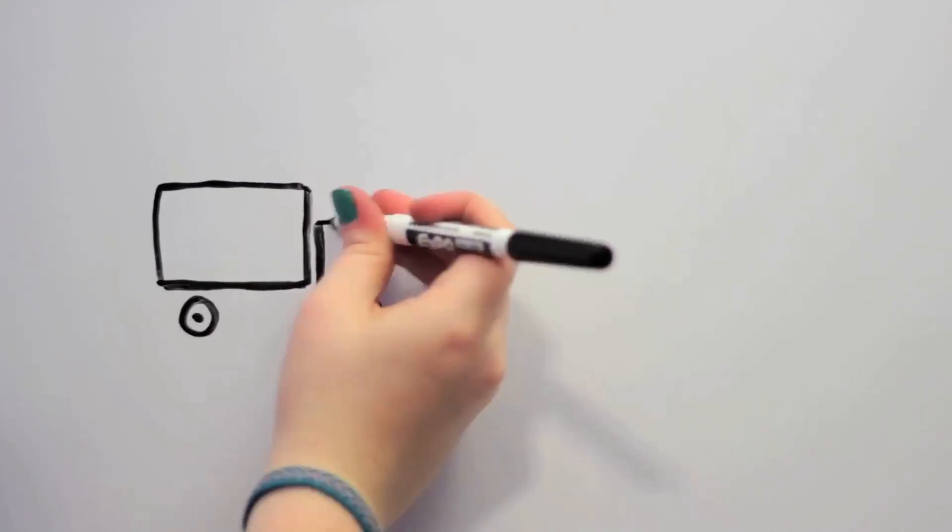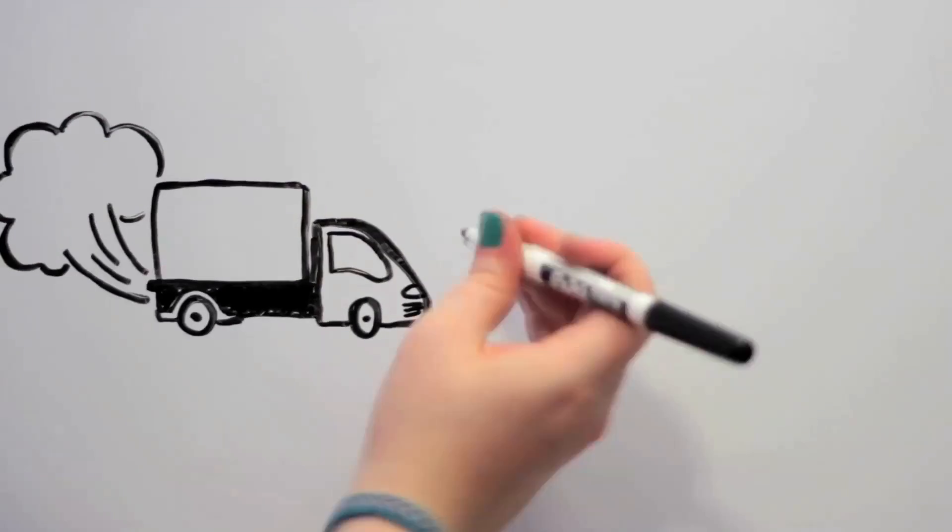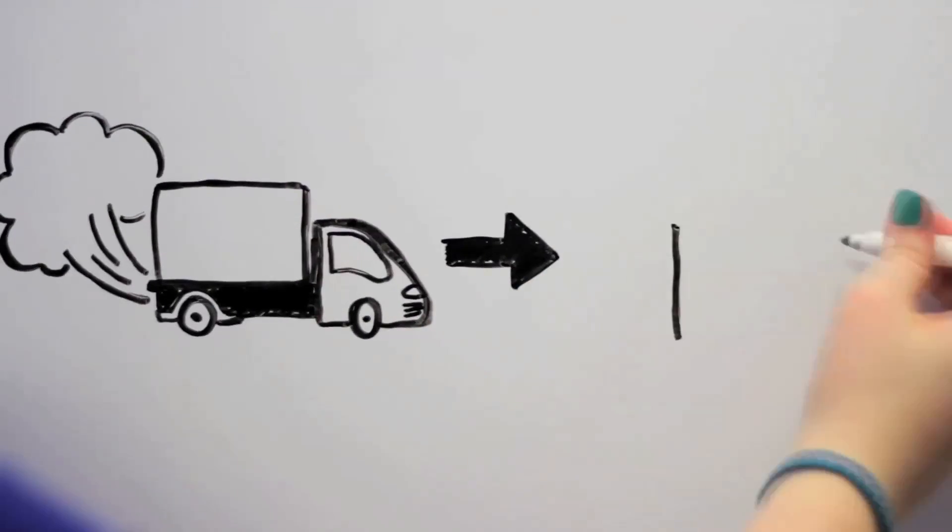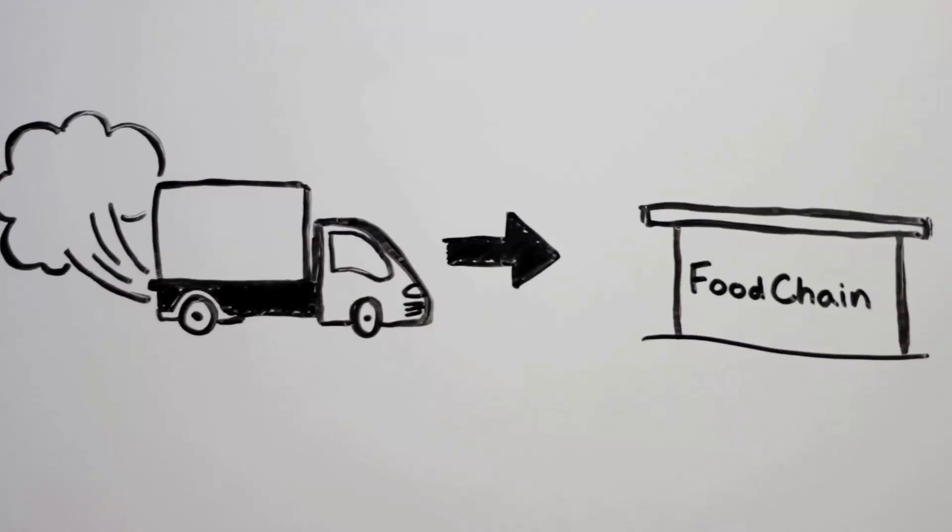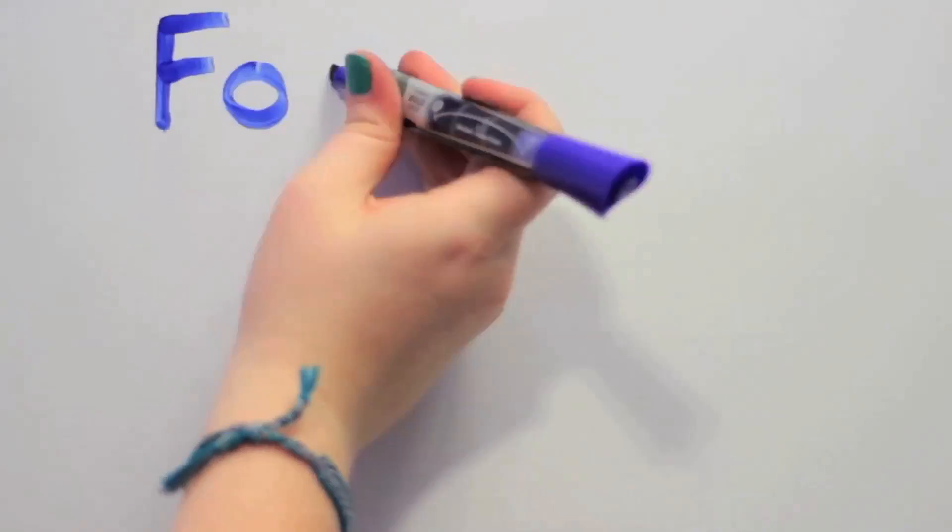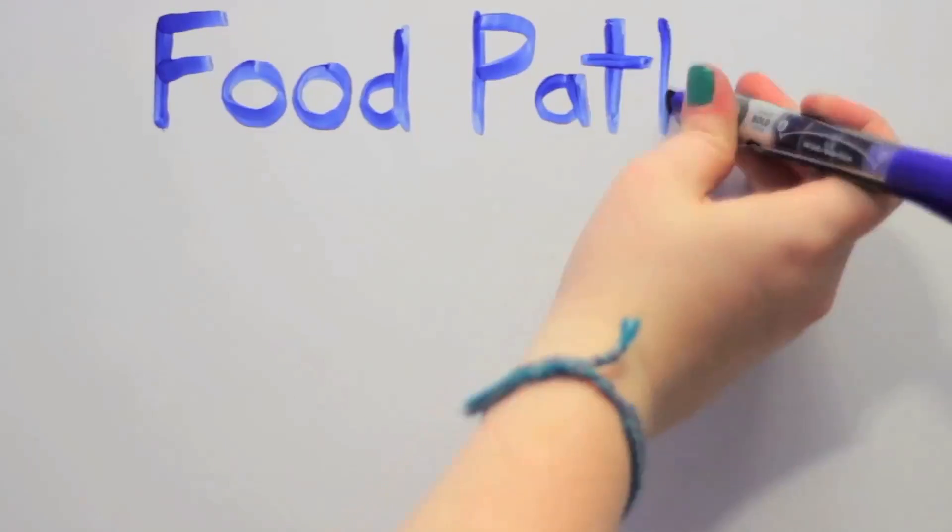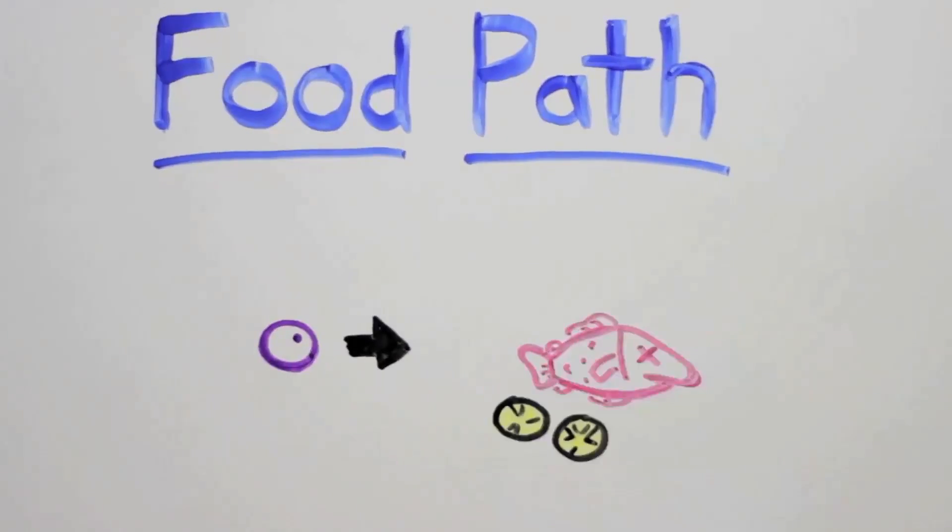By building our own fish hatchery, we save on the gas and energy that we'd otherwise spend to get our young fish every month to stock the aquaponic system. Plus, since Food Chain's primary mission is education, we want to show people the entire path their food travels. With the hatchery on site, we can show the complete cycle from fish egg to fish on a plate.